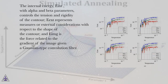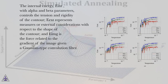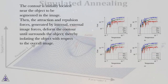The internal energy E_int with alpha and beta parameters controls the tension and rigidity of the contour. E_ext represents external considerations with respect to the shape of the contour, and E_img is the force related to the gradient of the image. Given a Gaussian-type convolution filter, the contour is initially located near the object to be segmented in the image.